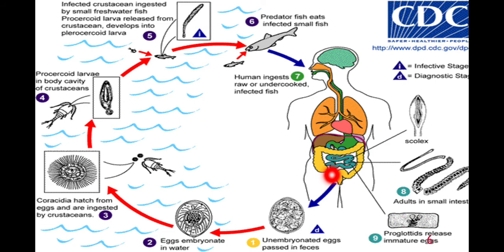The larvae reach the intestine, and inside the intestine these larvae mature into adult worms. The adult D. latum worm can be up to 13 meters in size and resides in the intestine of the human being. The proglottids (segments) of D. latum are hermaphroditic — they contain eggs, and eggs are excreted from the gravid segment present at the end of the worm. These eggs are then passed out into the feces of the human being.